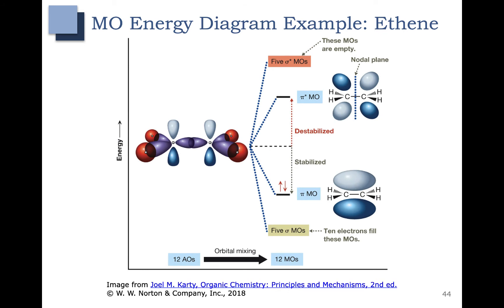Now let's take a look at the molecular orbital energy diagram for ethene. Ethene has a carbon-carbon double bond, and when we look at the molecular orbital diagram, you'll notice that it has a pi bond. The pi bonding molecular orbital and the pi antibonding molecular orbital are very close in energy, so we're going to look at these in some detail. Below the pi bonding molecular orbital are five sigma bonding molecular orbitals.